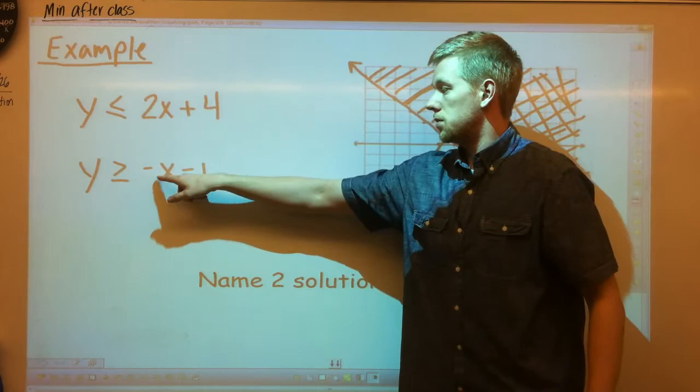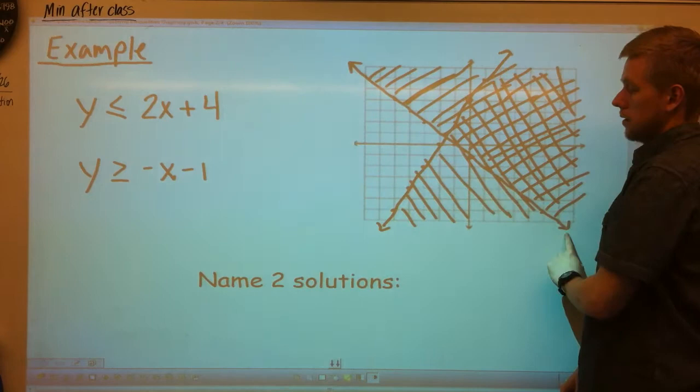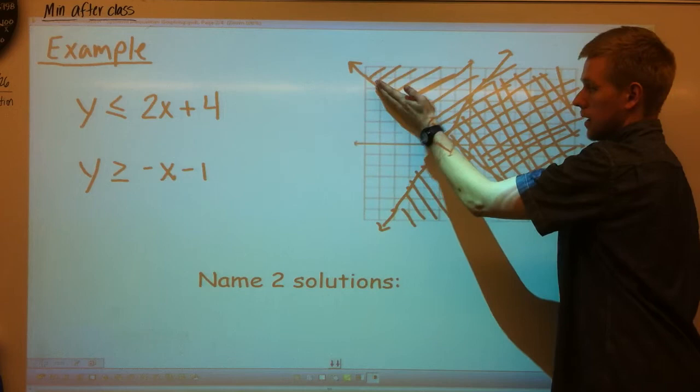The other line is y greater than or equal to negative x minus 1. So I start at negative 1. And it also has a line underneath it. So it's going to be solid. So it's greater than or equal to. So I can have solutions on this line. Remember, solid lines have solutions on them. So I can have solutions on this line and on that line. But I need to shade above to show that it's going to be anything on the line and above it, just like there was anything on this line and below it.